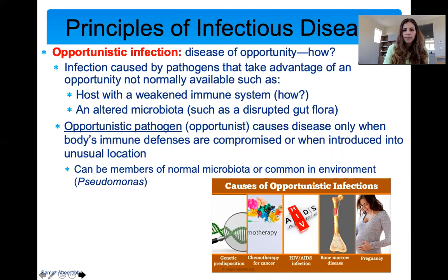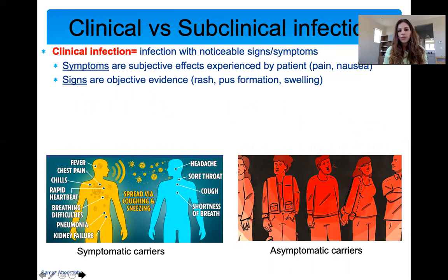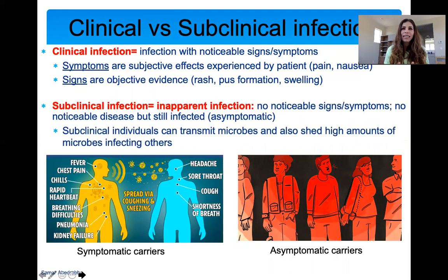Clinical and subclinical infections are also terms to know. A clinical infection is one that shows signs and symptoms. When I say better, it's because signs and symptoms get people to go to the doctor to deal with the infection. There are many infections that are subclinical — the exact opposite — meaning you're infected but you show no signs or symptoms. You're infected, you have something, but you do not know.